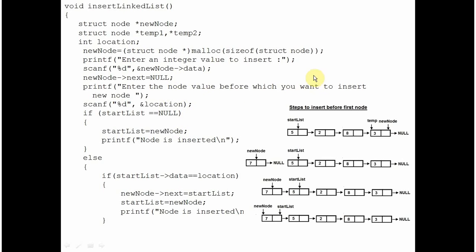You are asking the user the way you want to insert the new node. Suppose user inserts 5, assuming that user wants to insert before the first node. That 5 is assigned to the integer value location. You are first checking if the start list is null — that is, if the linked list does not exist. In that case, you are asking the start list pointer to point at the new node and declaring that the node is inserted. Because the linked list does not exist, the new node will be the first node of the linked list and it will exit.